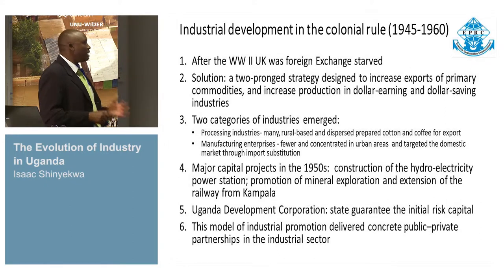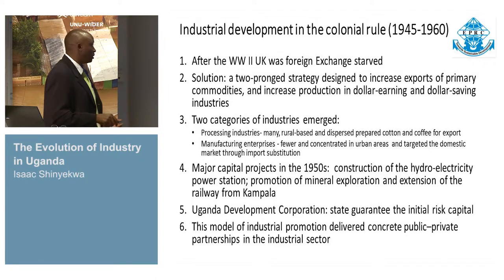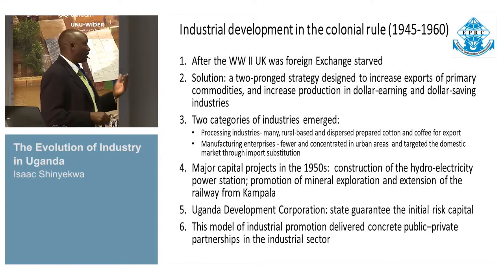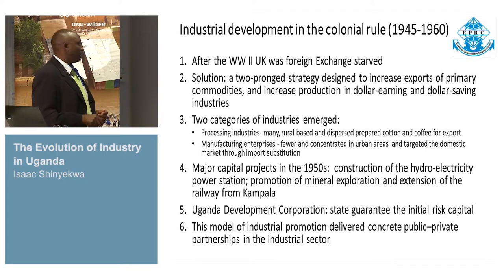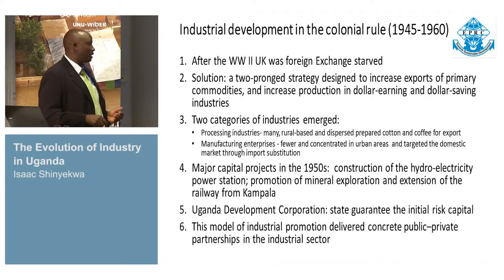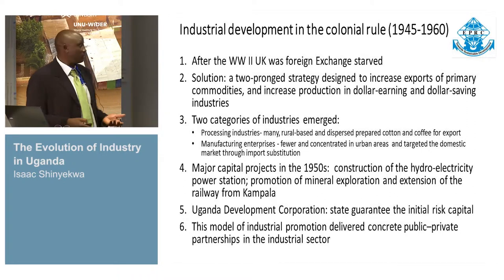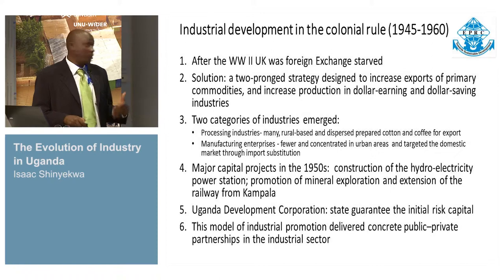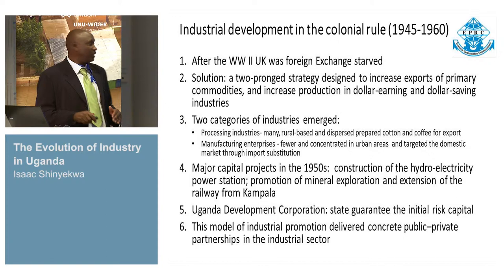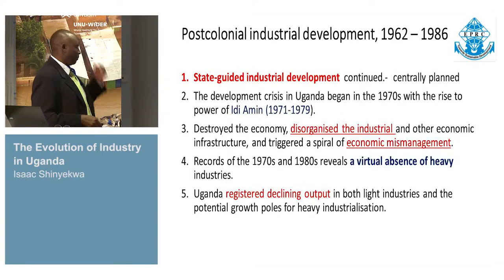In the 1950s, major projects were carried out: hydroelectricity power stations, promotion of mineral exploration, and extending the railway line to areas where raw materials are located. These were major infrastructure investments into the industrial sector. At the same time, to deal with credit, the Uganda Development Corporation was founded as a parastatal, largely to channel money to industrialists and also to guarantee initial risk capital for investors. This model of industrial promotion had a private-public partnership sort of structure, and it propelled industrial development during the colonial era.